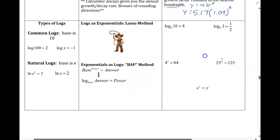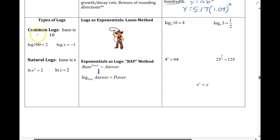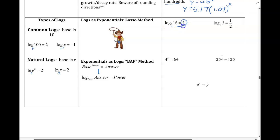Next, talking about logs. With common logs, if you don't see a base, it's assumed to be 10. With natural logs, the base is assumed to be that constant e. When going from log form to exponent form, we use our lasso method. We have log base 2 of 16 equals 4 — rewrite that as 2 to the 4th equals 16. Same thing for the next one: 9 to the 1/2 power equals 3.